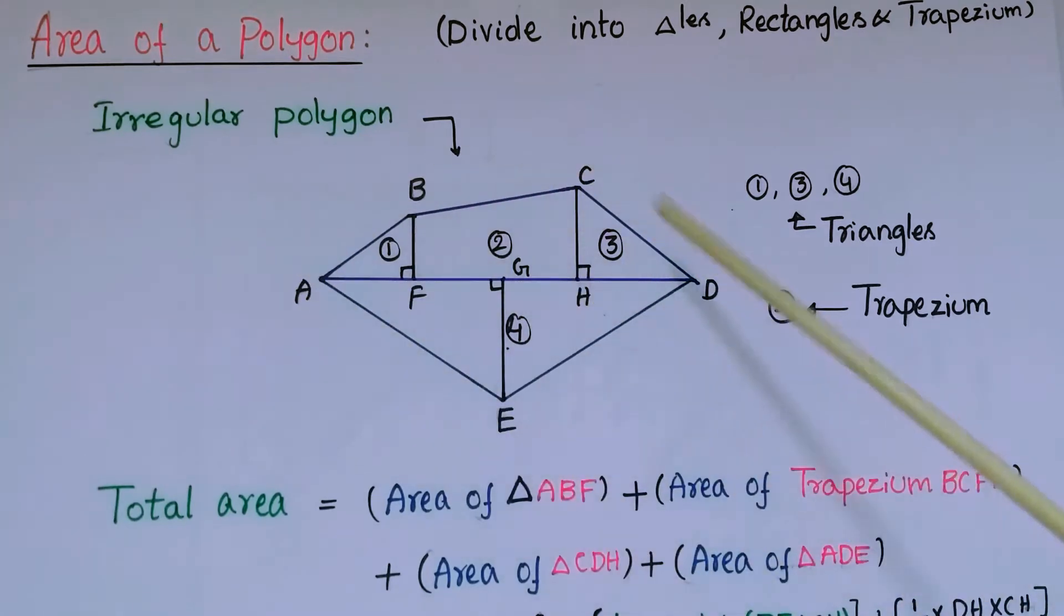Here ABCDE, we want to find the area of this shape. So for this we have to divide into triangles, rectangles and trapezium according to the shape. So here this shape has been divided into three triangles and one trapezium.